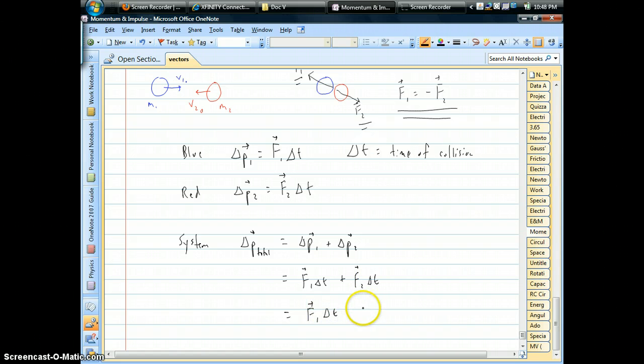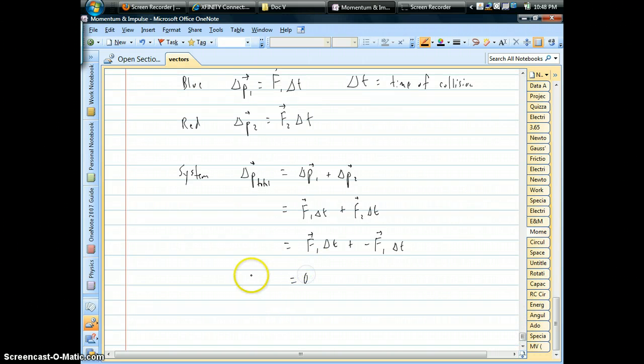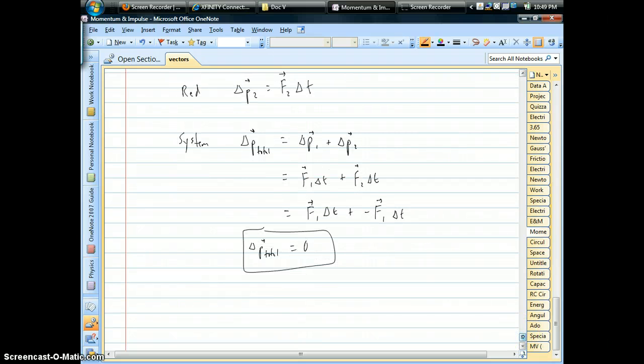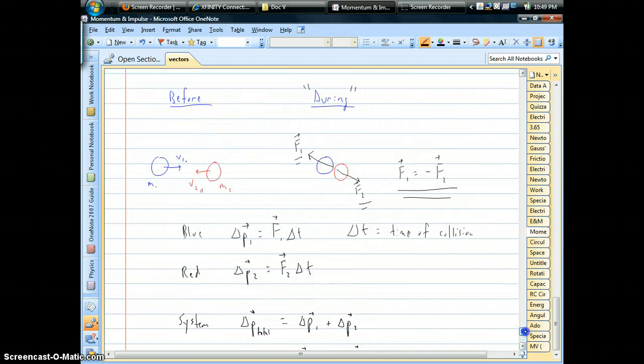...where F two, for example, is the opposite of F one. We can substitute that in. And all of a sudden, you can see how the total impulse, the total change in momentum for the system, will always turn out to be zero when you do this vector sum. As long as the net force, as long as the internal forces are zero, this is going to be true. And if your impulse is zero, that means there's no change in momentum. That means the total momentum for your system is conserved.